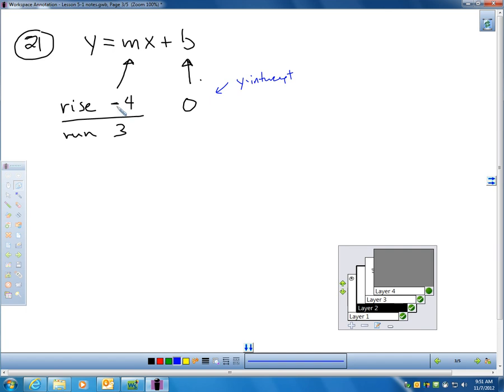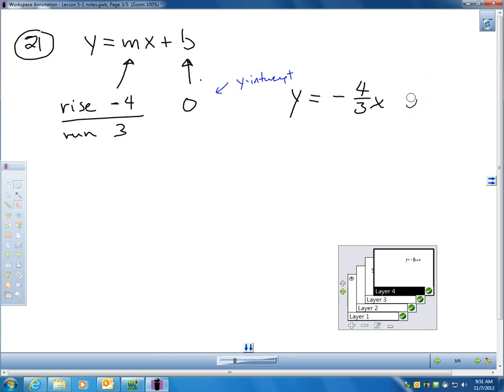So, my rise over run would be negative 4 over 3. That's my slope. All I have to do to write the equation is Y equals negative 4/3 X. Now, I didn't put plus 0 in there. I could put plus 0 and that would be correct because that is the Y-intercept. But, when you're adding 0, obviously, that's not necessary to write. So, if you wrote it like this, I would consider that correct. If you did put plus 0 in here, I would still consider that correct.